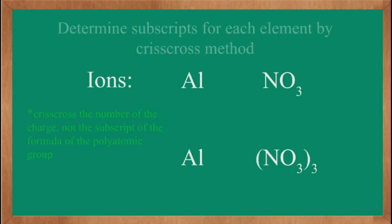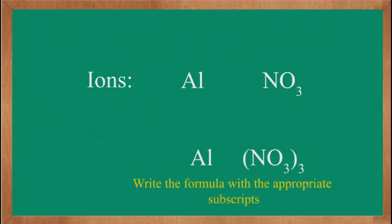After writing like this, now we have to write the formula with the appropriate subscripts. Aluminum nitrate is Al(NO₃)₃.